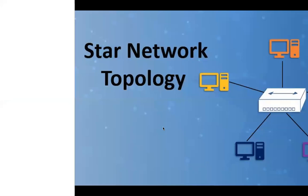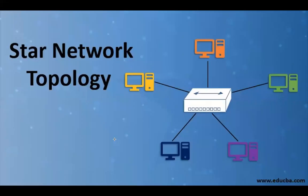We have star topology, ring topology, and bus topology. In a star topology, each node has a dedicated set of wires connecting to a central network hub. So each of them has wires connected to a central hub, and they are all tapping from that central hub. Each computer has a separate wire connecting to a central hub - that makes it a star topology.